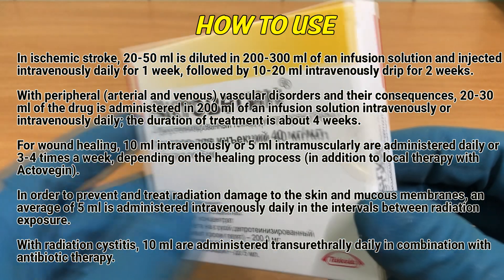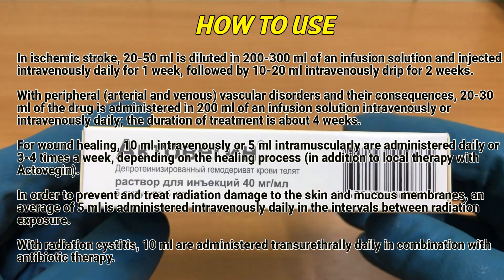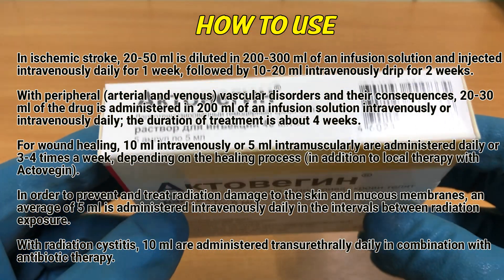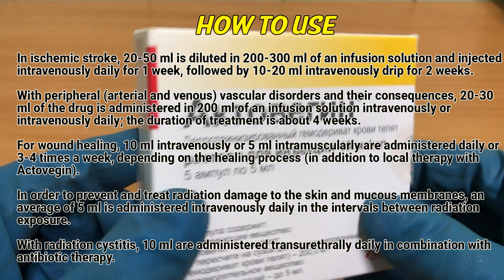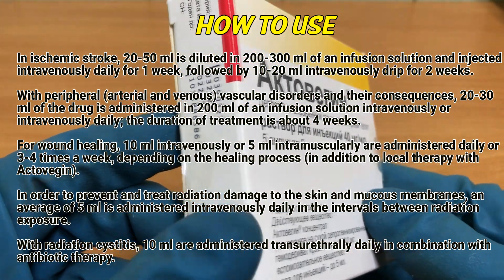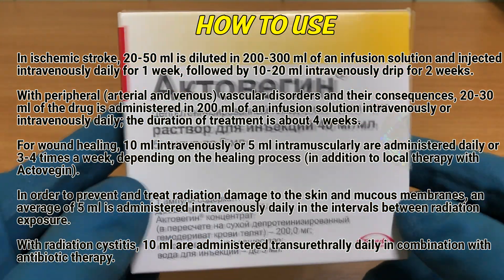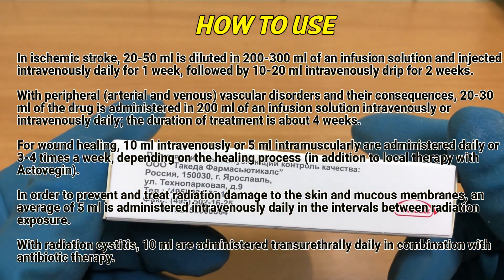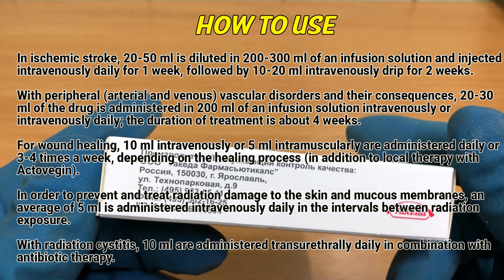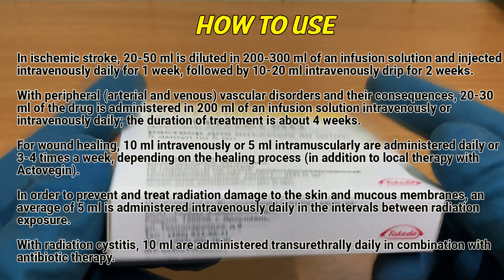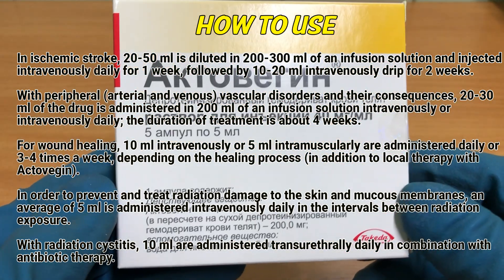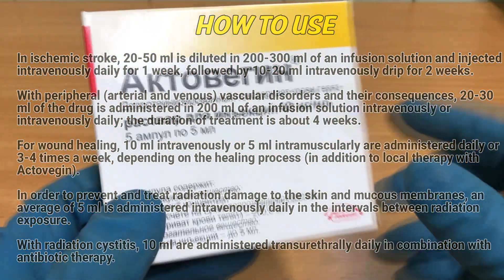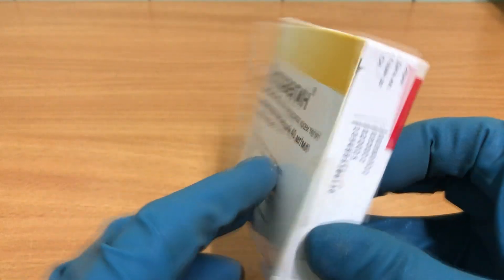In order to prevent and treat radiation damage to the skin and mucous membranes, an average of 5 mL is administered intravenously daily in the intervals between radiation exposure. With radiation cystitis, 10 mL are administered intravesically daily in combination with antibiotic therapy.